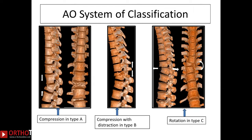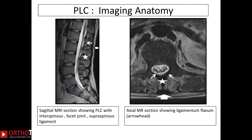In the thoracolumbar spine, injuries can be classified as compression fractures due to flexion, flexion-distraction injuries with distraction of posterior elements and compression of anterior elements, fracture dislocation, or translation (Type C injury). The important thing is to assess the PLC on MRI. The best views for assessing the PLC are either a STIR image to suppress fat, or a T2 fat-saturated image, in which the supraspinous ligament appears as a dark band, the ligamentum flavum appears as a dark band, and the interspinous ligaments and facet capsules can also be assessed.